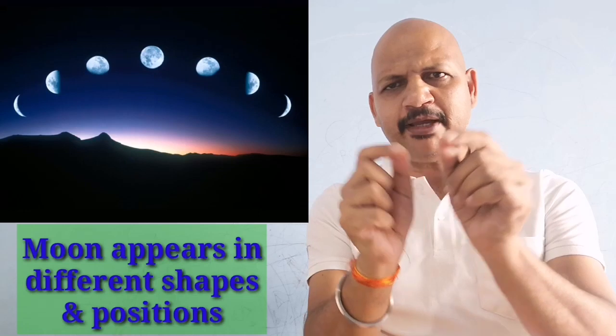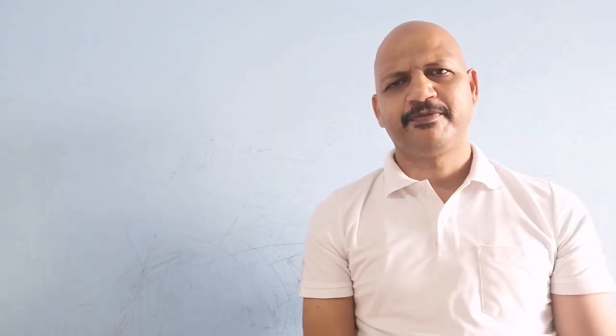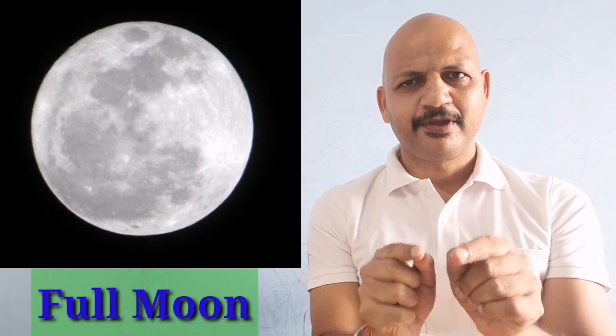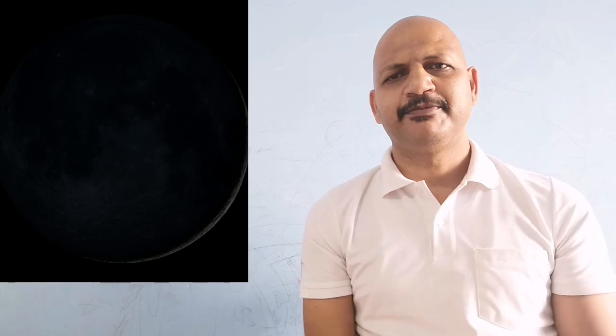When we look at the sky at night we find that apart from the tiny shining objects we also see the moon. This moon appears in different shapes and positions. Once in a month we can see the full moon - that night is known as full moon night or purnima. But after a fortnight, that means 15 days, we cannot see the moon. That night is called new moon night or amavasya.